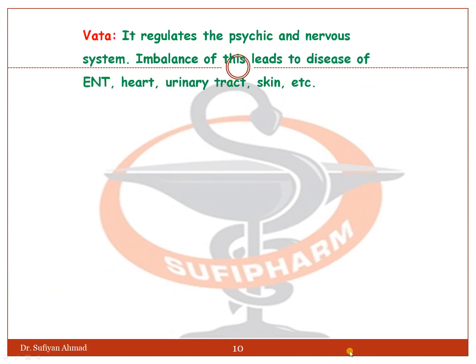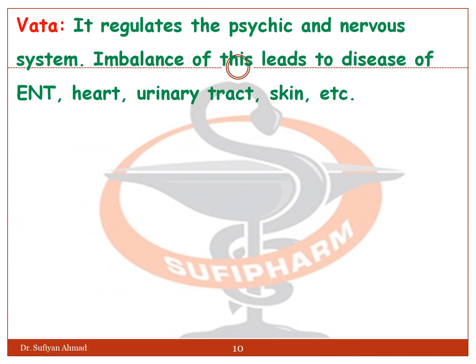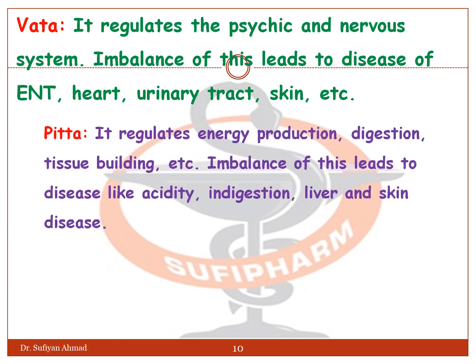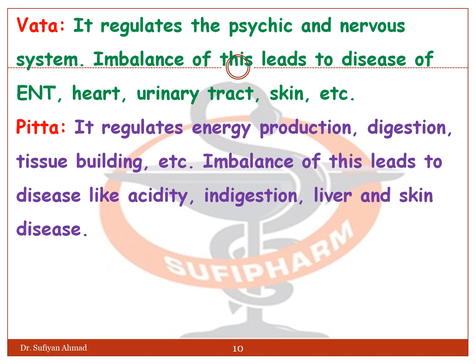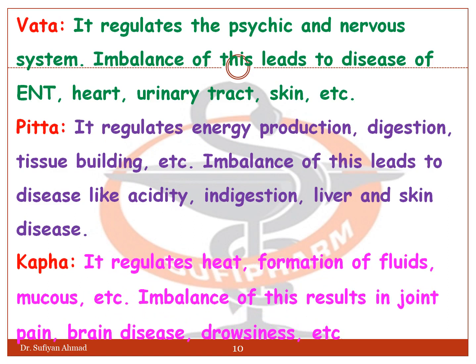Pitta regulates the psychic and nervous system; imbalance leads to diseases of the ENT, heart, urinary tract, skin, etc. Vata regulates energy production, digestion, tissue building, etc.; imbalance leads to diseases like acidity, indigestion, liver and skin disease. Kapha regulates heat, formation of fluid, mucus, etc.; imbalance results in joint pain, brain disease, drowsiness, etc.